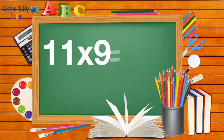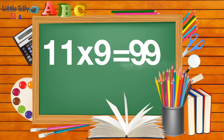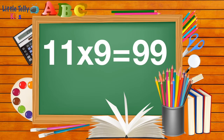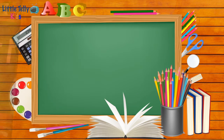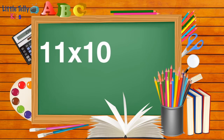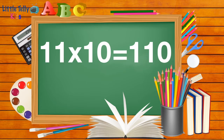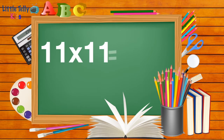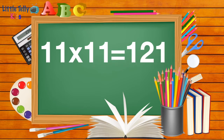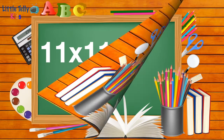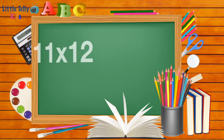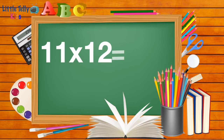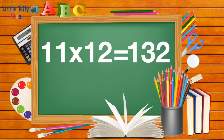Eleven nines are ninety-nine. Eleven tens are one hundred and ten. Eleven elevens are one hundred and twenty-one. Eleven twelves are one hundred and thirty-two.